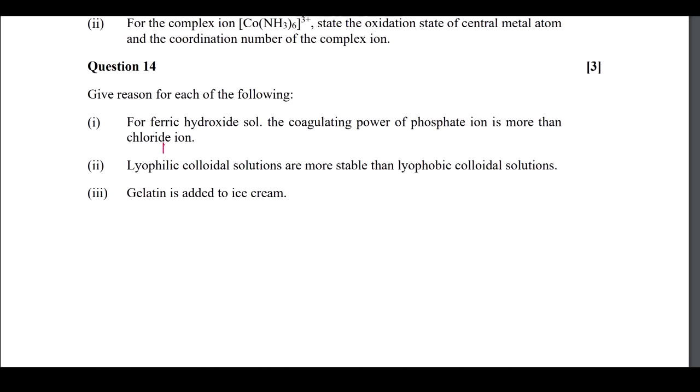Coming for the next question. For ferric hydroxide sol, phosphate ion has more coagulating power. According to Schulze-Hardy principle, higher the charge of the anion - PO4 3 minus - higher will be the coagulating power when the cation is fixed. That's why phosphate will have more coagulating power.